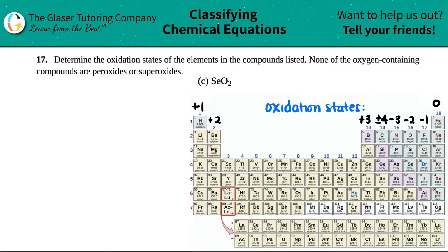Number 17. Determine the oxidation states of the elements in the compounds listed, and none of the oxygen-containing compounds are peroxides or superoxides. Okay, so we've done tons of problems like this already, right? This one's not going to get us.